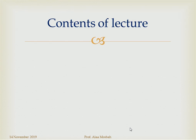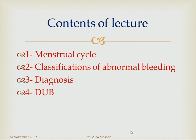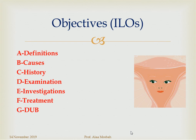Let us start our journey. The content of this lecture includes the menstrual cycle, classification of abnormal bleeding, diagnosis, and dysfunctional uterine bleeding. We will cover all four topics today. We want to know the definition of normal and abnormal menstrual cycle, the causes of abnormal bleeding, how to diagnose a case via history, examination, and investigations, how to treat such cases, and finally about dysfunctional uterine bleeding.